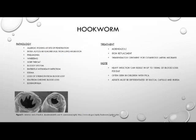The pathology of the hookworm can lead to allergic itching at the site of penetration, intra-alveolar hemorrhaging from the lung migration causing pneumonia, wheezing, sore throat, and bloody sputum. Enteritis can occur with heavy infections, edema, loss of strength from the blood loss, and iron deficiency anemia from chronic blood loss, as well as eosinophilia.